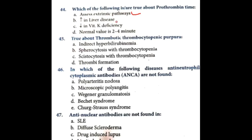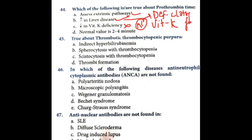Which of the following is true about prothrombin time? Prothrombin time assesses the extrinsic pathway — true. Prothrombin time is increased in liver disease because prothrombin is produced in the liver; in liver disease there is deficiency of clotting factors so prothrombin time increases. It is almost normal in vitamin K deficiency. The normal value of prothrombin time is not 2 to 4 minutes. So the answers are: extrinsic pathway and increased in liver disease.